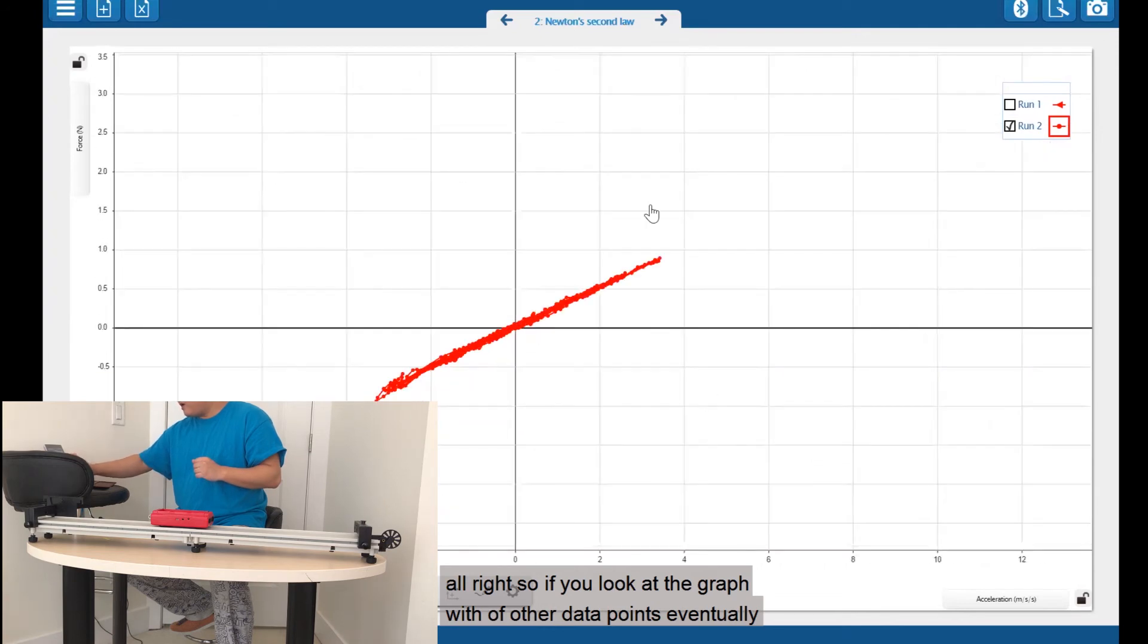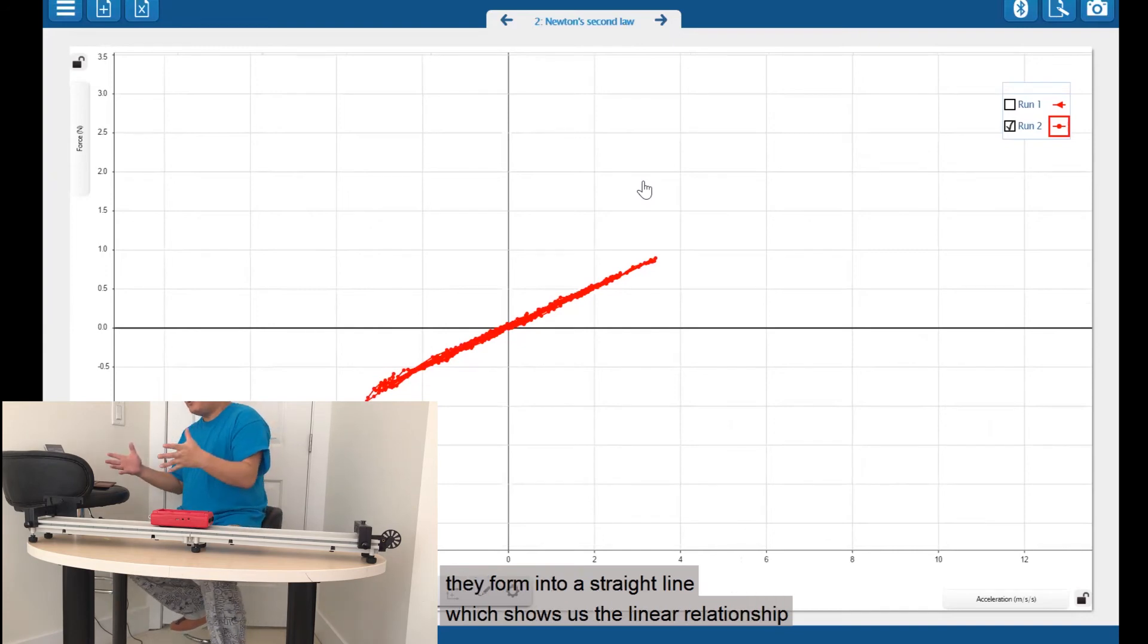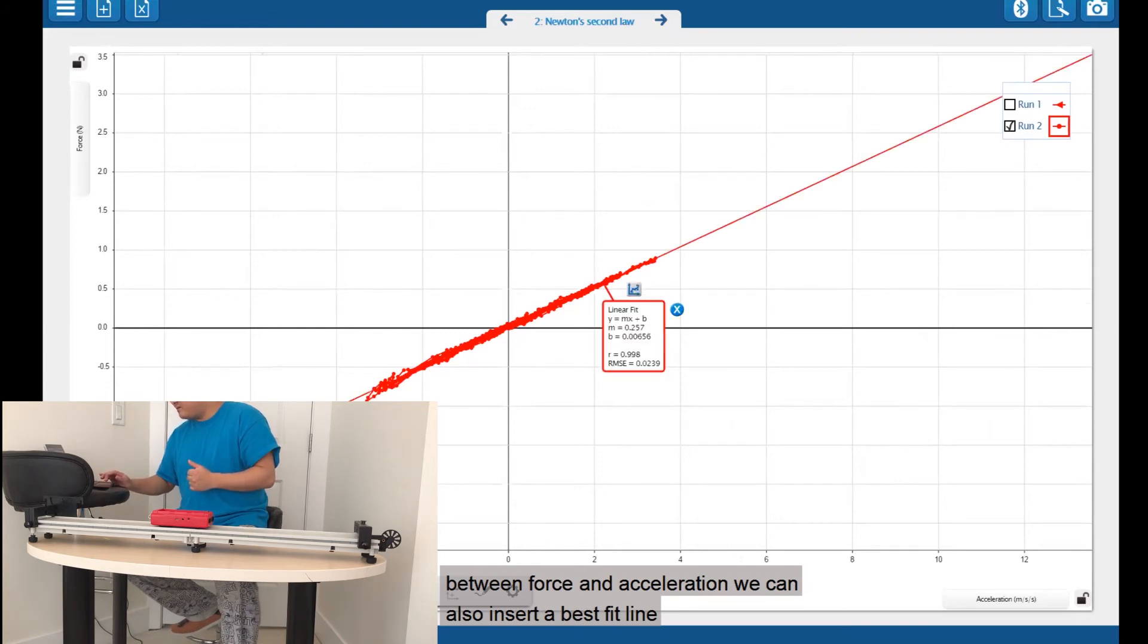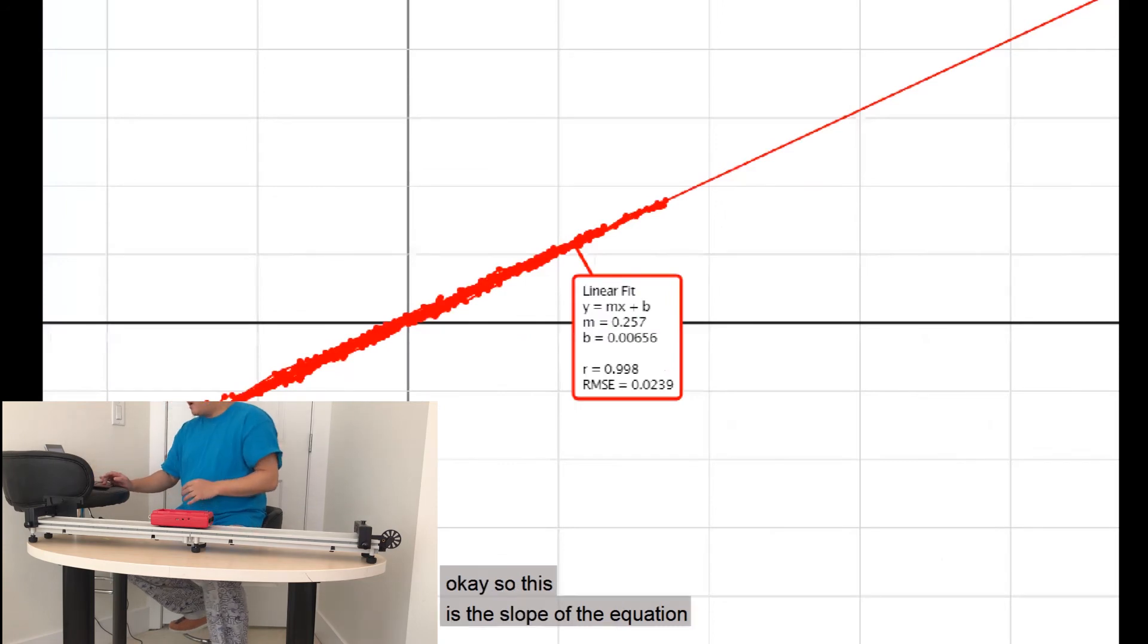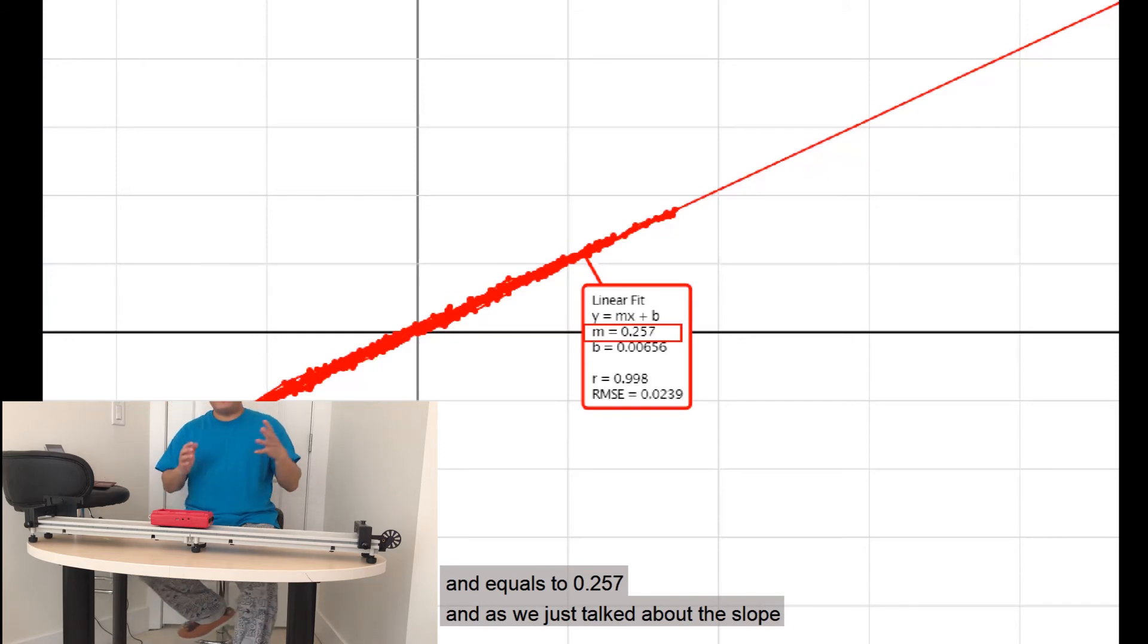So if you look at the graph, the graph with all the data points, eventually they form into a straight line, which shows us the linear relationship between force and acceleration. We can also insert a best fit line and get the equation of it. So this is the slope of the equation. M equals to 0.257.